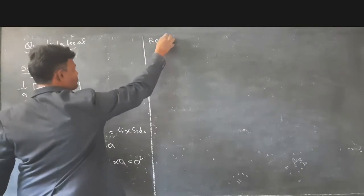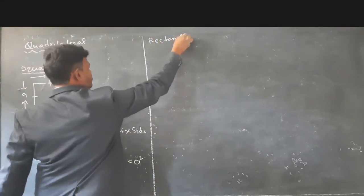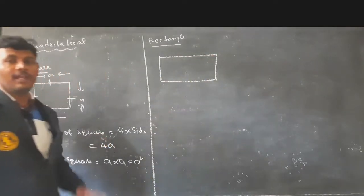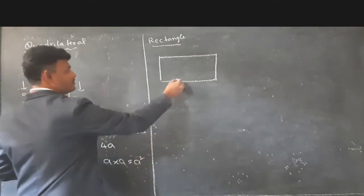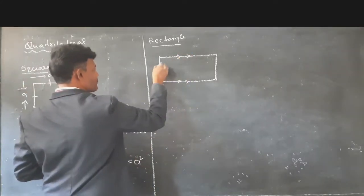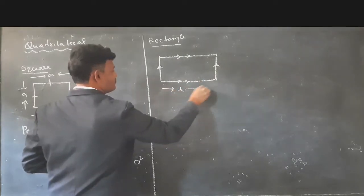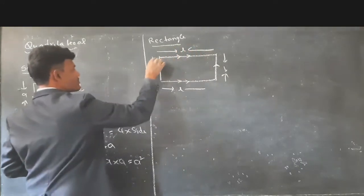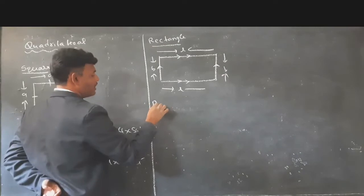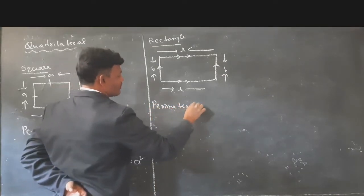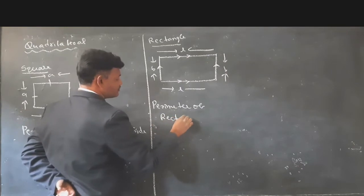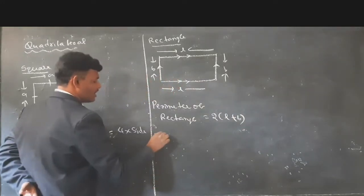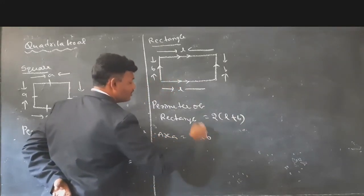Next, rectangle. In a rectangle, the lengths of the opposite sides are equal and parallel. The perimeter of a rectangle is 2 into (L plus B). Next, the area of the rectangle is length into breadth.